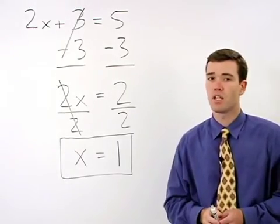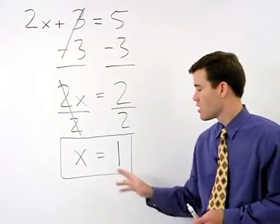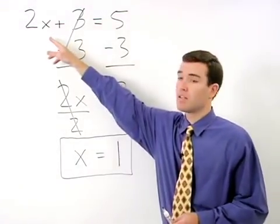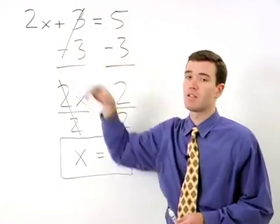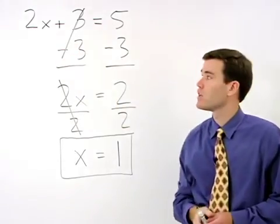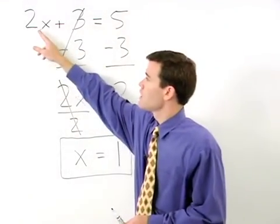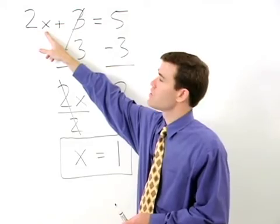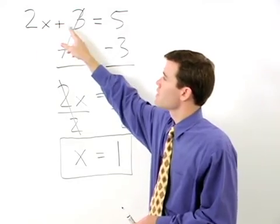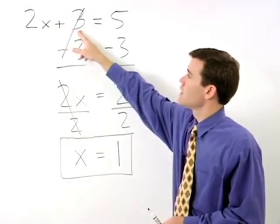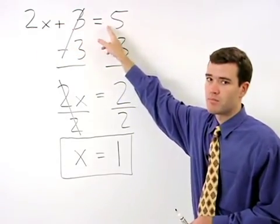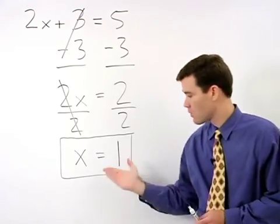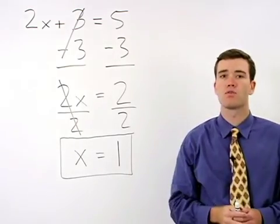Feel free to check your answer by plugging a 1 back in for x in the original equation. We get 2 times 1, which is 2, plus 3 equals 5. So it works, and we know our answer is right.